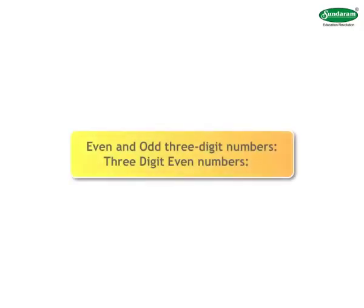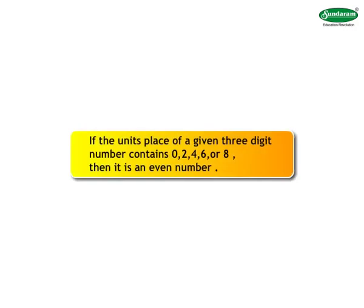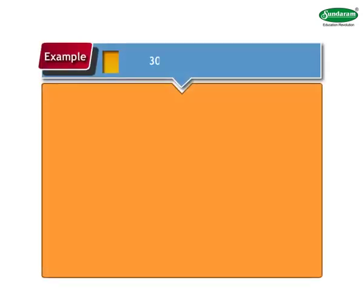Even and odd numbers — even and odd three-digit numbers. Let us first begin with three-digit even numbers. The same rule is applied to find out whether a three-digit number is even or odd: you only have to check the units place of the given number. If the units place contains 0, 2, 4, 6, or 8, then it is an even number. Let us see some even three-digit numbers: for example, 300, 482, 934, 706, and 598.